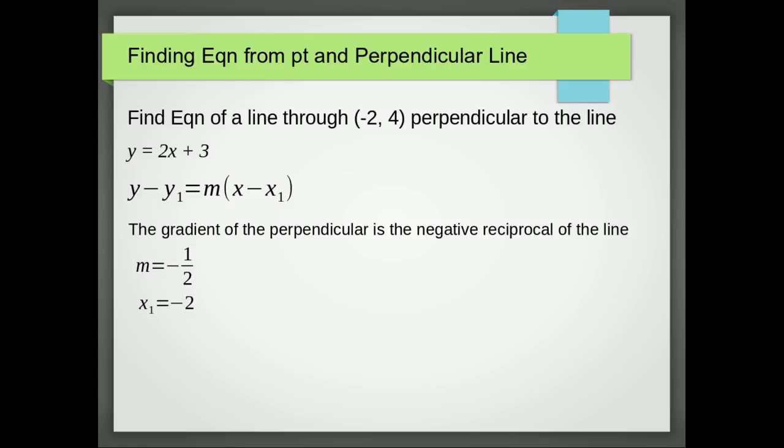And we've got x1 is minus 2, we've got y1 is 4. Substitute those three values back into our equation, and we get y minus 4 equals minus a half times all of x plus 2.